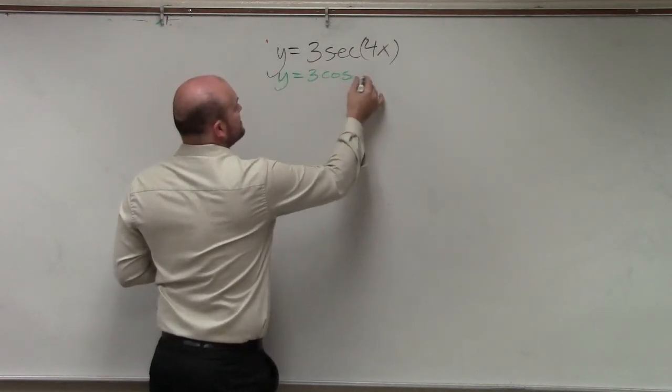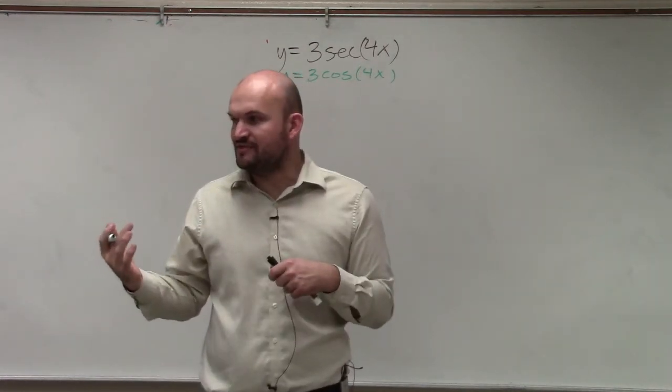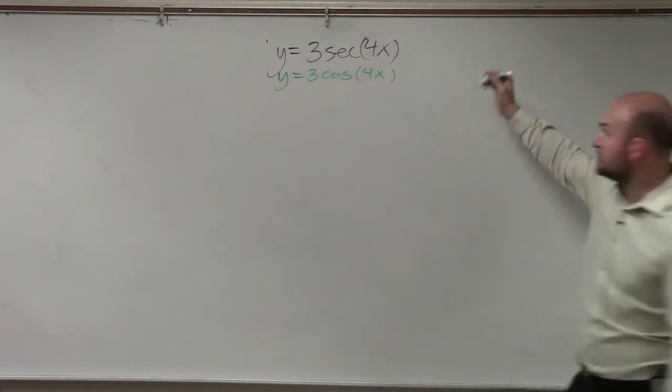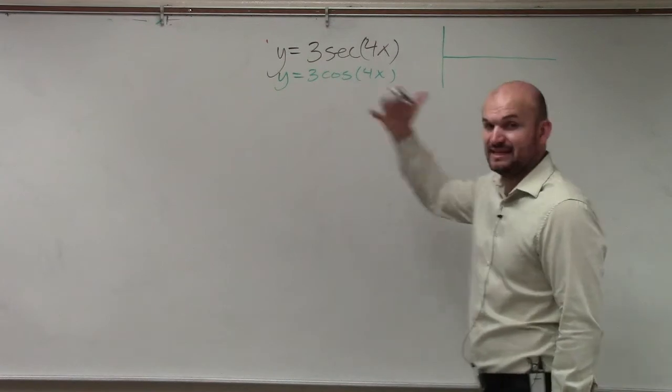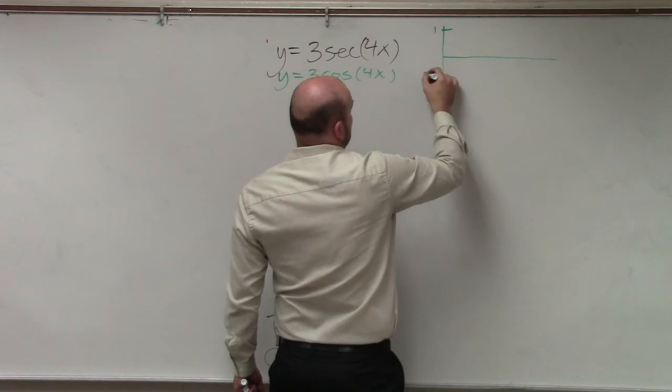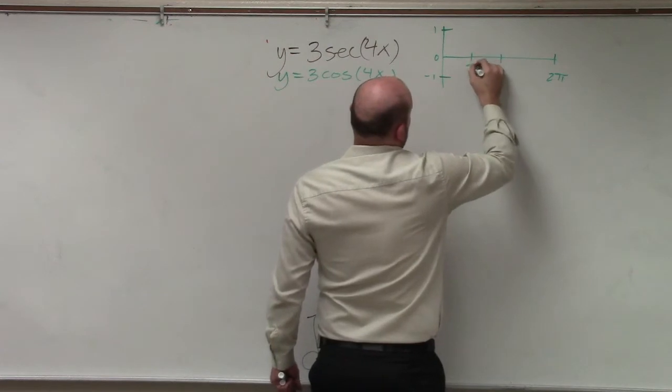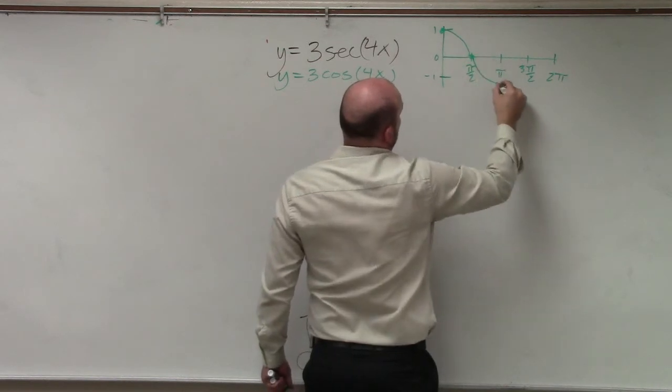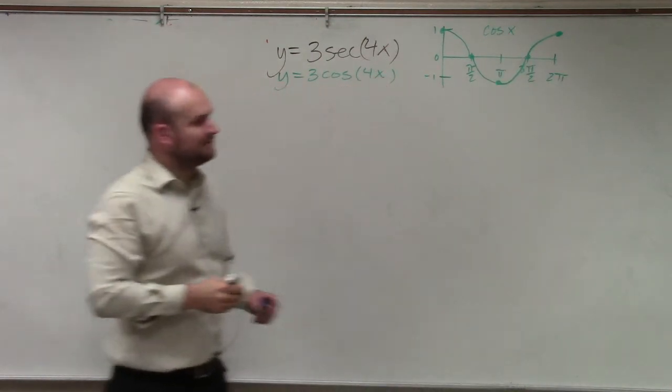y equals 3 cosine of 4x. Let's graph this, then we'll go through our other pieces of information. We should be pretty familiar with what the cosine of 4x looks like. First of all, we can graph the initial period. All of us should know what the initial period of cosine looks like. That graph goes up to 1, goes down to negative 1, has a period of 2π. That's what the parent graph looks like.